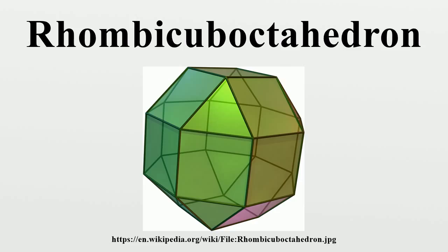Pyritohedral symmetry: A half-symmetry form of the rhombic arboctahedron exists with pyritohedral symmetry, as Coxeter diagram and Schläfli symbol S2,3,4, and can be called a cantic snarboctahedron. This form can be visualized by alternatingly coloring the edges of the six squares. These squares can then be distorted into rectangles, while the eight triangles remain equilateral.